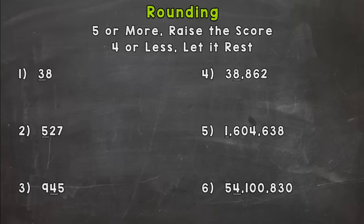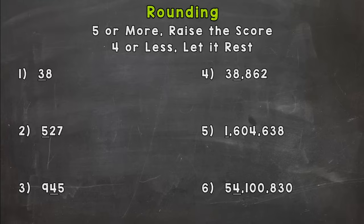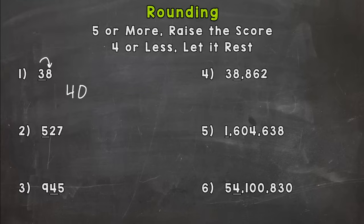Let's take a look at number one. We have 38 and the three is underlined — that's in the tens place. So we are going to see if this number is closer to 30 or 40. Let's take a look next door: we have an eight. Does that tell the three to rest and stay at 30, or round up to 40? Five or more, raise the score — eight is more than five, so we round up. Our rounded number is 40.